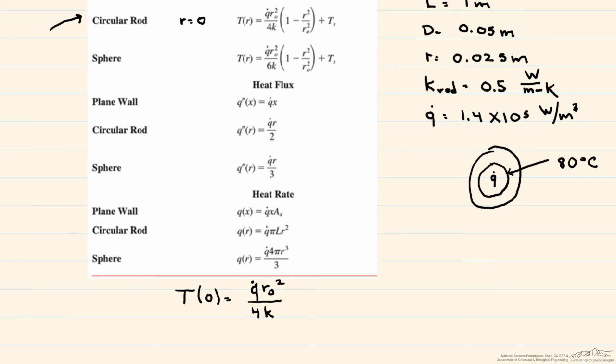Now you have to be careful here. This k is the thermal conductivity of the rod. And we multiply it by 1 minus r squared over r outside squared. And we add to that our surface temperature, which you can see is 80 degrees C.